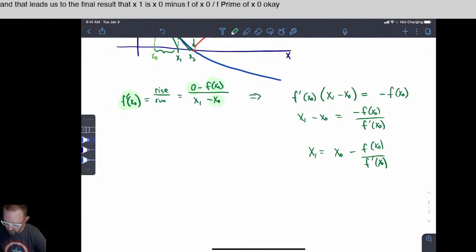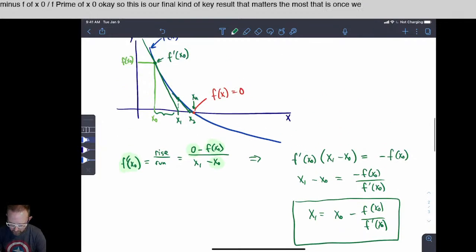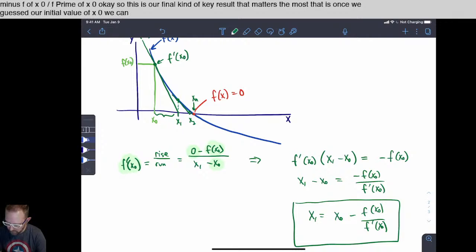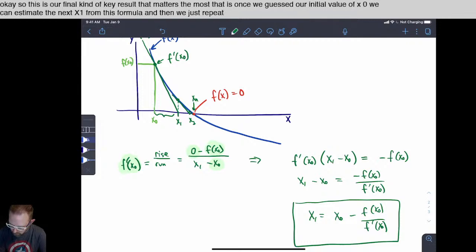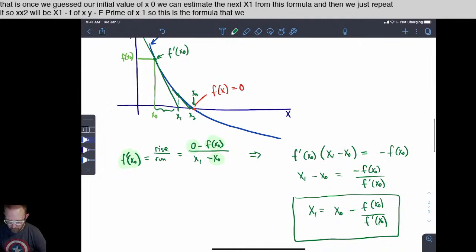Okay, so this is our final kind of key result that matters the most. That is, once we guess our initial value of x zero, we can estimate the next x one from this formula. And then we just repeat it. So x two will be x one minus f of x one over f prime of x one. So this is the formula that we want to implement in Python.